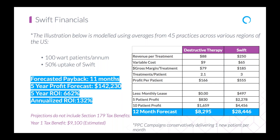Looking at the theoretical model: 100 wart patients per year is a fairly average number across our practices. With a conservative estimate of 50 percent uptake — lower than what we normally see — we still arrive at meaningful profit numbers. What we like to highlight is that on average you can generate around $28,000 worth of profit, representing roughly a $20,000 increase compared to what you'd generate with current therapies. Bottom line: when we get patient conversion, Swift can be very profitable.